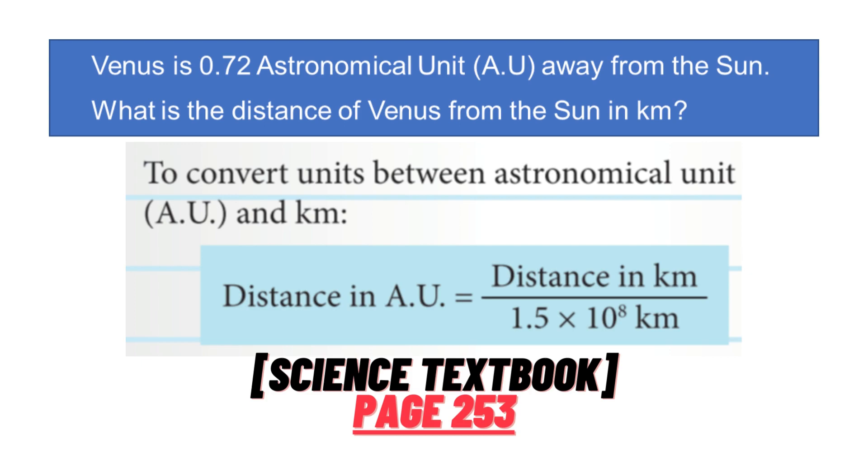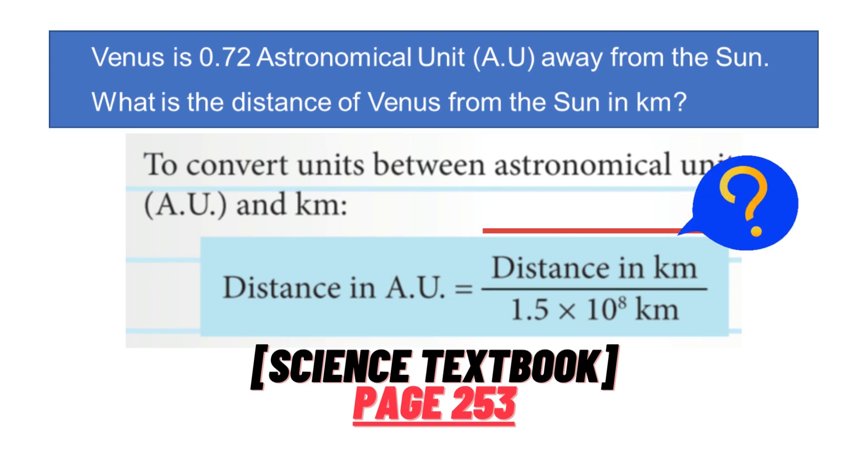As you can see, the distance of Venus in AU is 0.72. Now, how about the distance in kilometers?